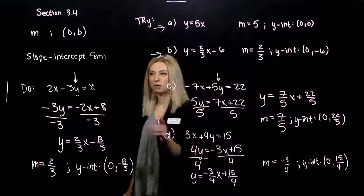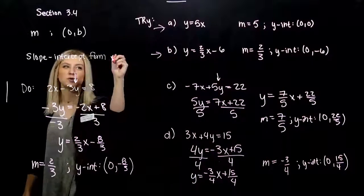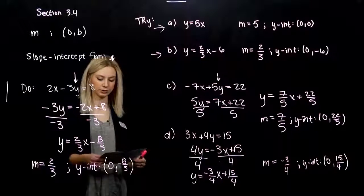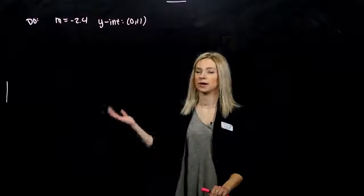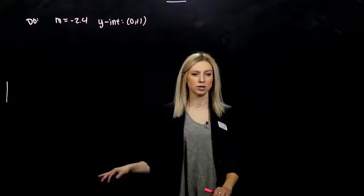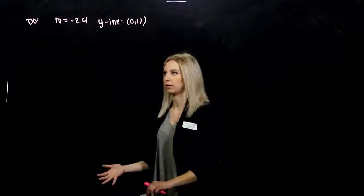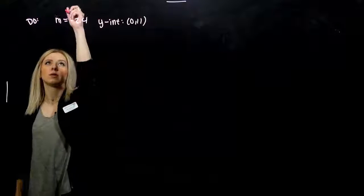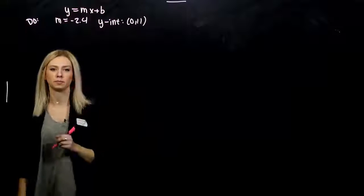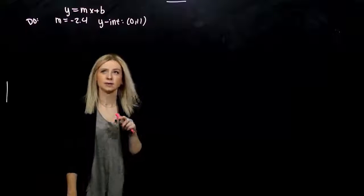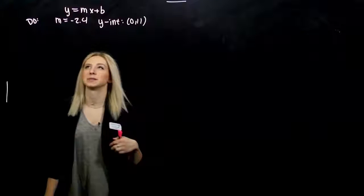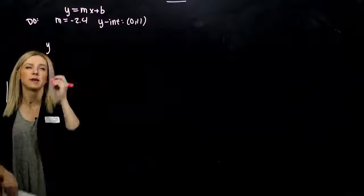That slope-intercept form is super important because it gives you a lot of information about what the picture's going to look like. Now let's suppose we have the opposite. I have the information, and I want to write the equation of the line. We're still dealing with y equals mx plus b form. We can just take this information and plug it in where we know it's going to fit.